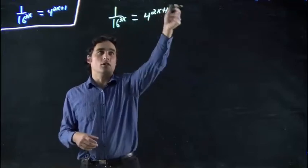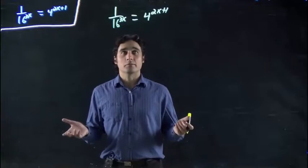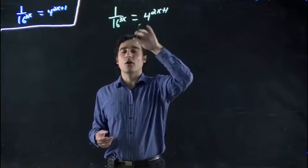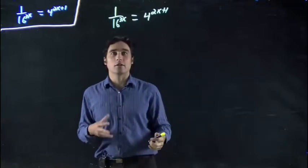2x plus 1 is all in the power, so 4 to the 2x plus 1. We have to solve this. Well, the way we've been looking at it is trying to make the bases the same. And we should hopefully by now start seeing things like 16 and 4, they should be able to go together.